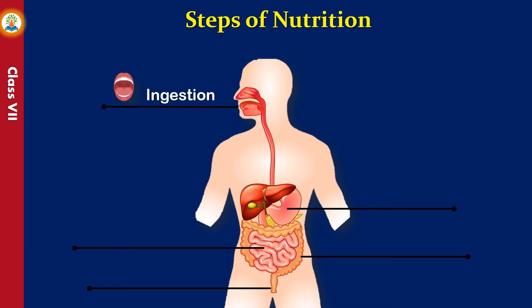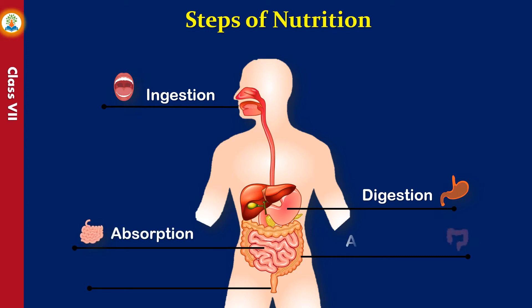Ingestion: in this process, intake of food takes place. Digestion: in this process, ingested food is broken down into smaller compounds. Absorption: here simpler substances are absorbed by blood. Assimilation: in this process, utilization of absorbed nutrients takes place. Egestion: in this process, undigested food is expelled from the body.